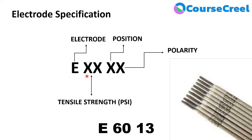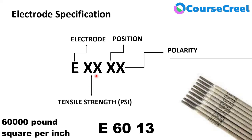Coming to the next digits in E6013 — the first two digits after E represent the tensile strength of the electrode. In the format EXXXX, the first two X's represent 60, meaning 60,000 PSI (pounds per square inch) tensile strength.